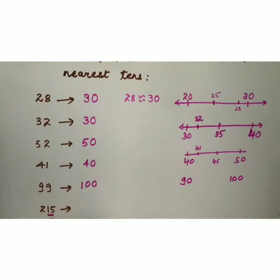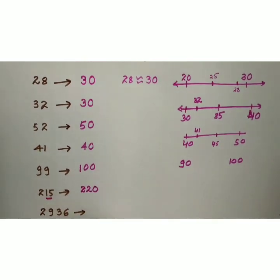Next is 215. 215 me hum last two digits 15 ko dekhenge. 15 lie karta hai 10 aur 20 ke beech me. Toh 15 ko jab hum round off karenge, toh humare paas hoga 20. Toh it will be 220. In the same way, next part 2936. Isme bhi hum last two digits ko dekhenge, 36. 36, 30 aur 40 ke beech me lie karta hai. Toh 36, 40 ke zyadha closer hai. Toh is number ko round off karke 29, aur 36 ki place me aayega 40.